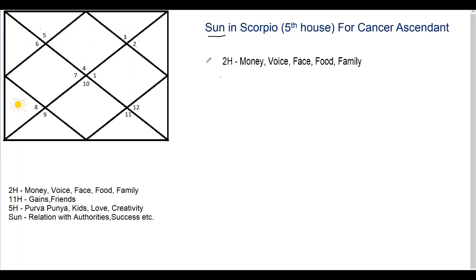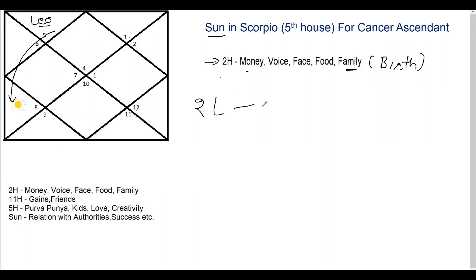Let's begin our analysis with the second house related areas, because Sun is the lord of Leo which falls in the second house. The primary karakas of the second house are that it shows your wealth, your accumulated money, and your family — that is, the family of birth. By extension it also shows the state of your family when you took birth. When this lord of second falls into the fifth house, it is a very auspicious position.